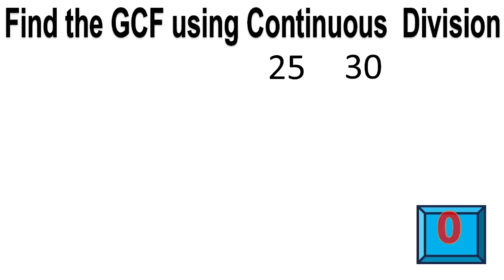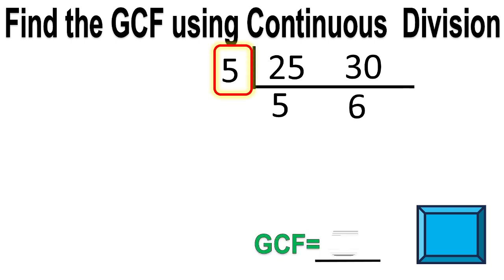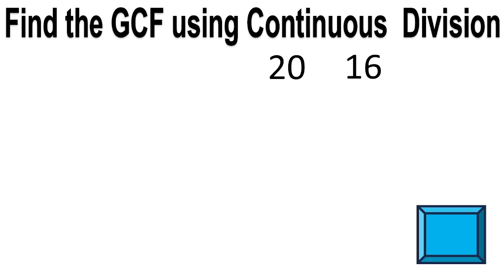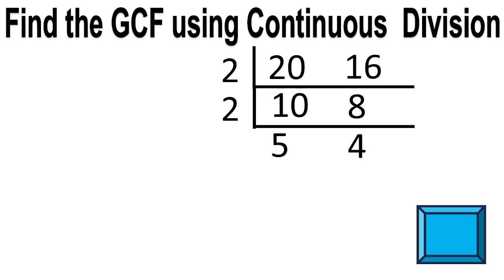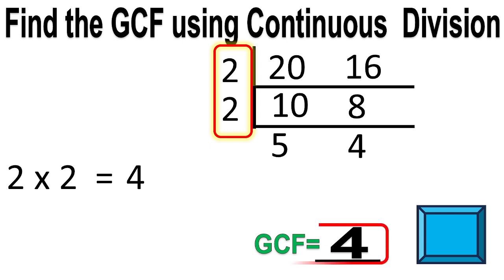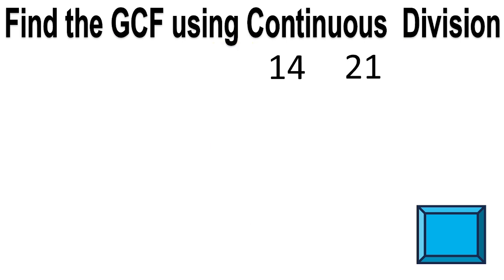Times up. The answer is 5. Next: 20 and 16. Times up. The answer is 2 times 2 equals 4. The greatest common factor is 4. Next: 14 and 21.